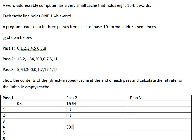Word 300, which is in block 300, goes into line four. Six is a hit. Seven is a hit. Five is a hit. And 11 replaces three, because 11 mod eight is three — it goes into line three. So the cache at the end of pass two has contents: 64, 1, 2, 11, 300, 5, 6, 7. And I have five hits.